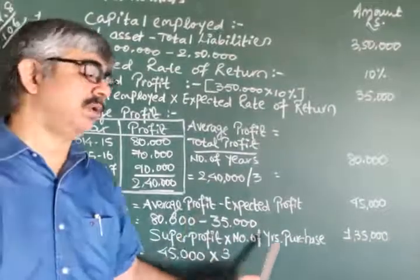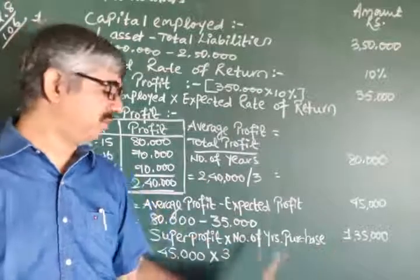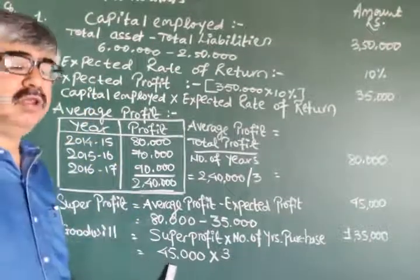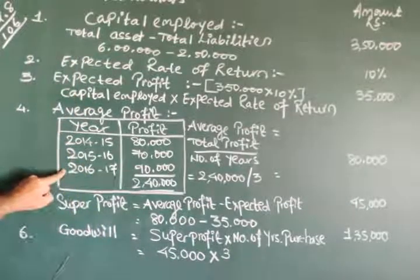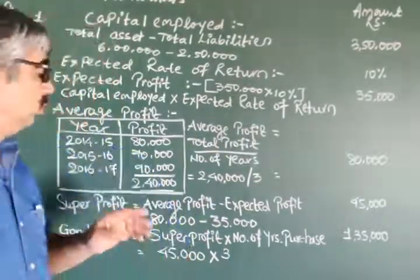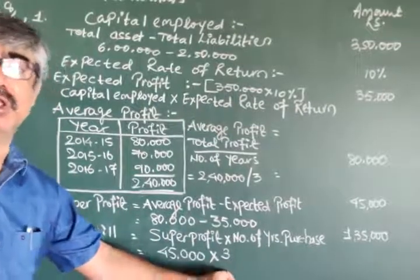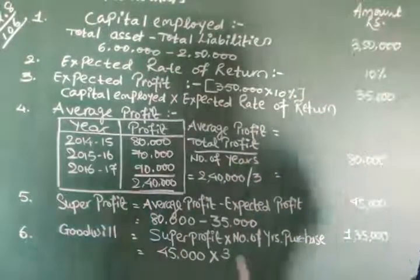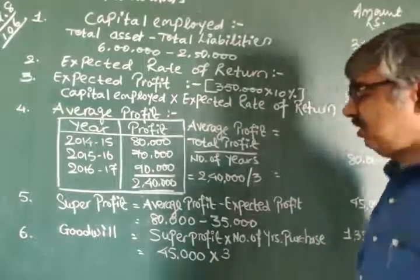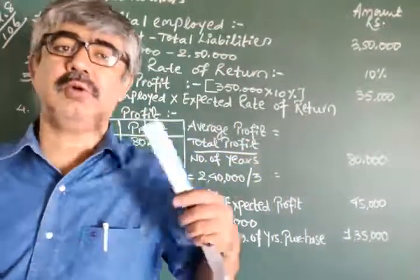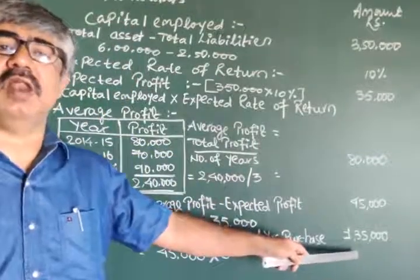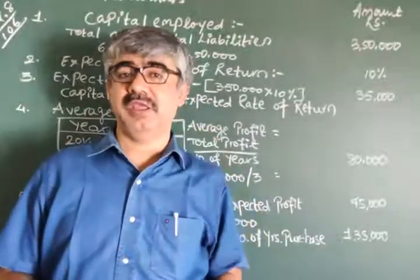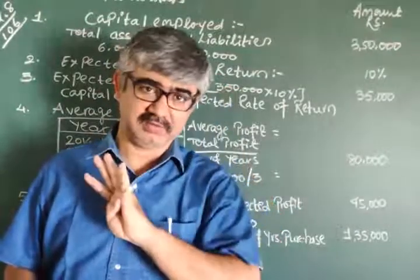And the last, goodwill. On the verge of getting full four marks, so now be careful, no mistakes. Goodwill equals to super profit, last step, into number of years purchase. Now this information, number of years purchase, already given in the question itself. So 45,000 into 3, not because these three years are there. Number of years purchase is already given in the question, whatever the information given in the question you are supposed to borrow that information only. So friends, goodwill equals to 45,000 into 3, your calculation is 1,35,000 and it is the correct answer. And so you individually secured full four marks.